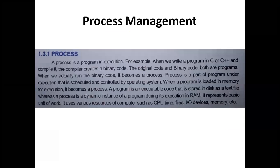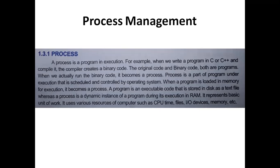As we have seen in our previous lecture, a process is a program that is executed. The program can be written in any programming language, such as C or C++, and this is called source code. When we execute the compiler, the compiler converts it to binary code, and then it runs the binary code as a process.